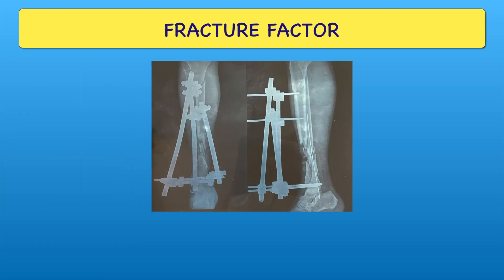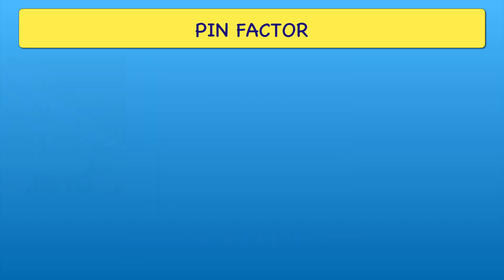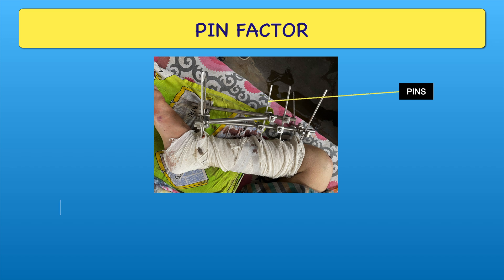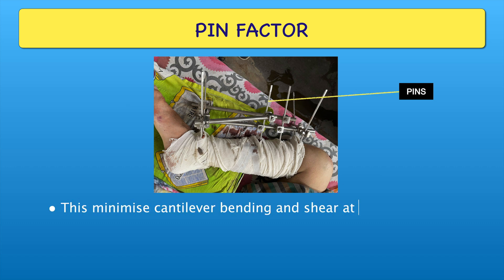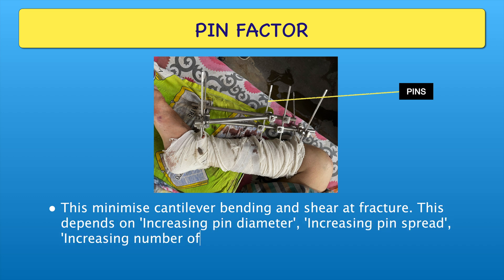The first is fracture factor, which means the fracture should be aligned end-to-end at first. The second is pin factor, which minimizes cantilever bending and shear at the fracture. This depends on increasing pin diameter, increasing pin spread, increasing number of pins, and decreasing distance from pin to fracture.